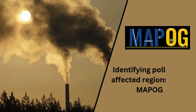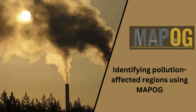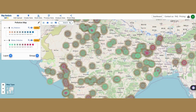Embark on an exploration of the MapoG Map Analysis Tool to facilitate decision-making for implementing pollution mitigation measures. Join us for a methodical walkthrough of this robust tool. With the help of this visual representation, the areas most affected by pollution are highlighted, paving the way for a comprehensive understanding of the issue.